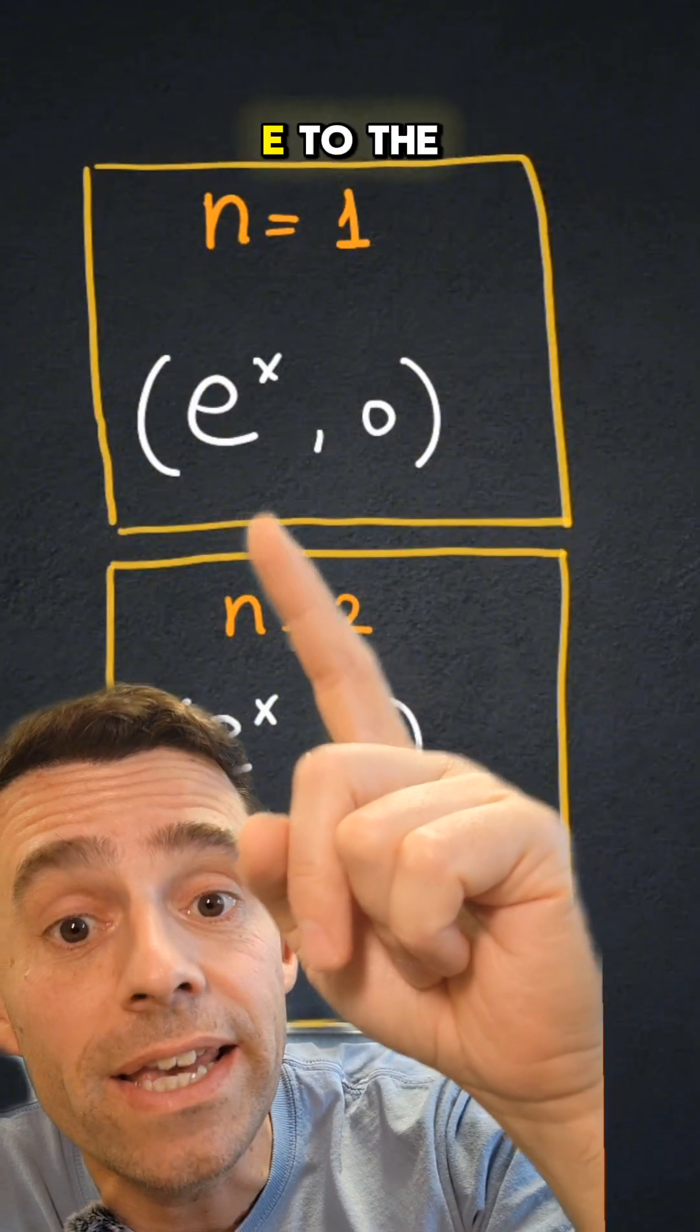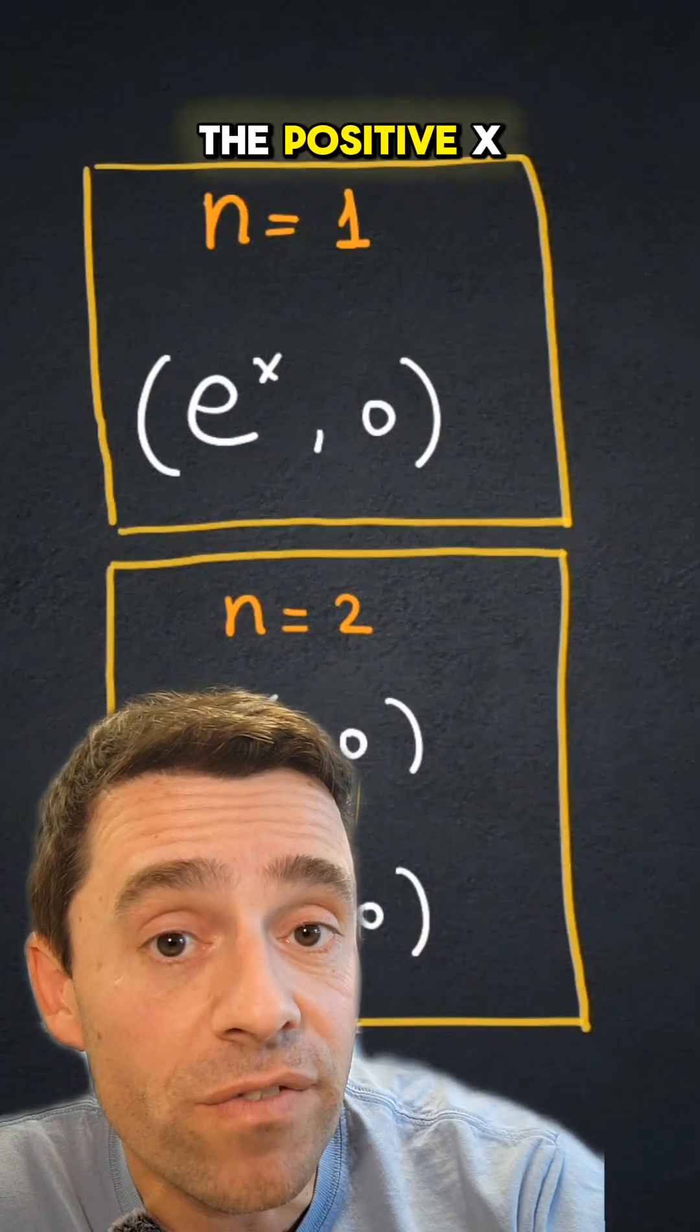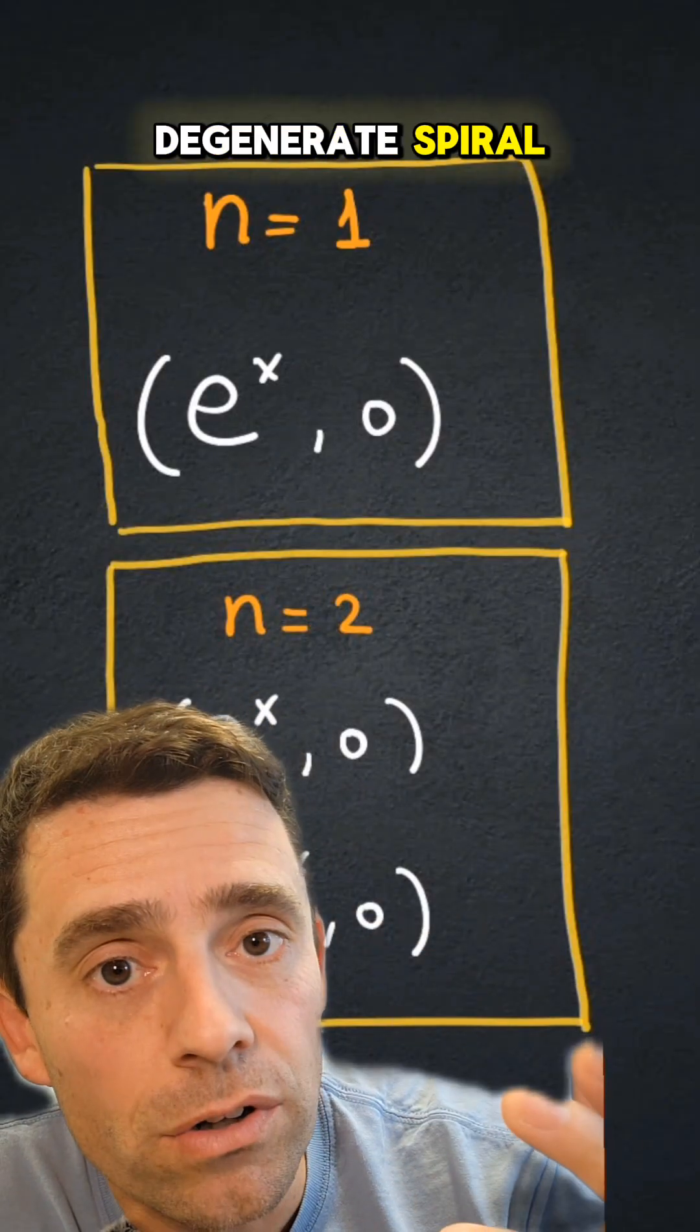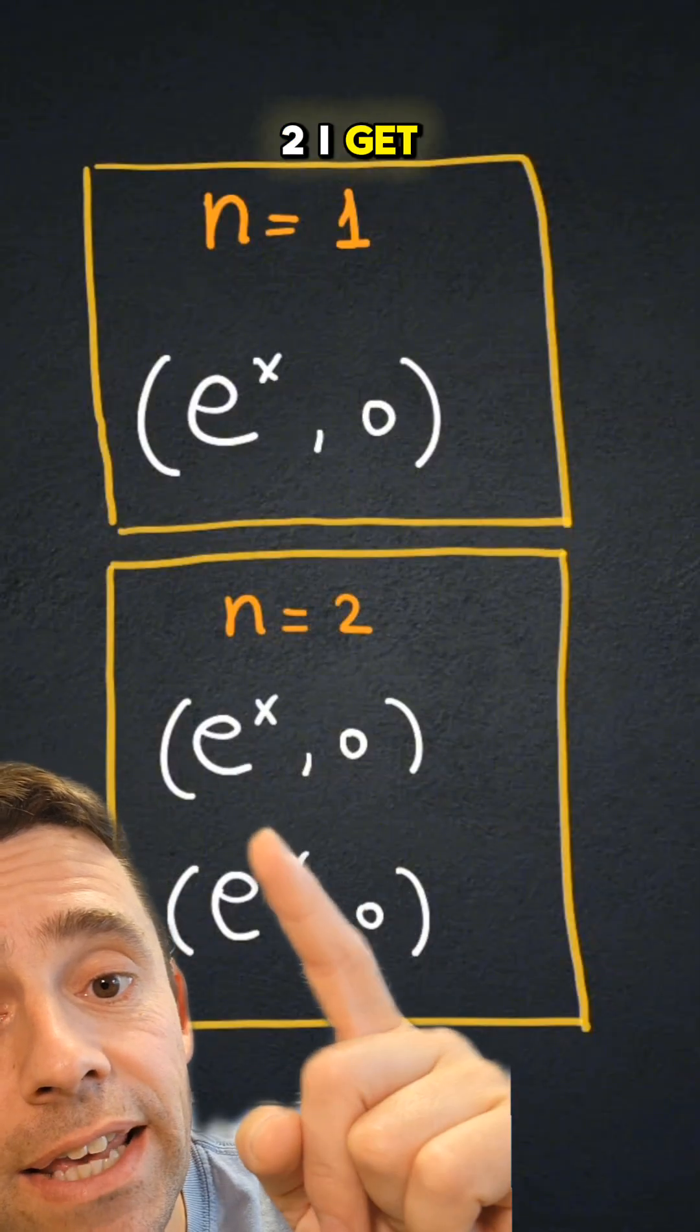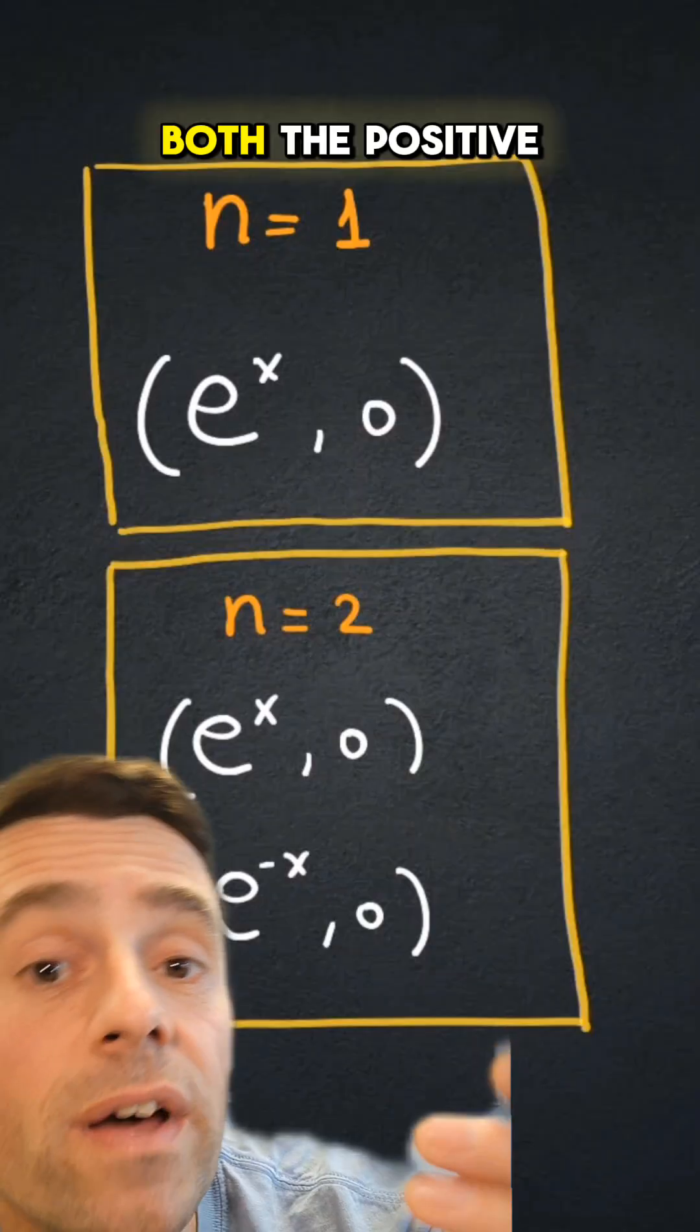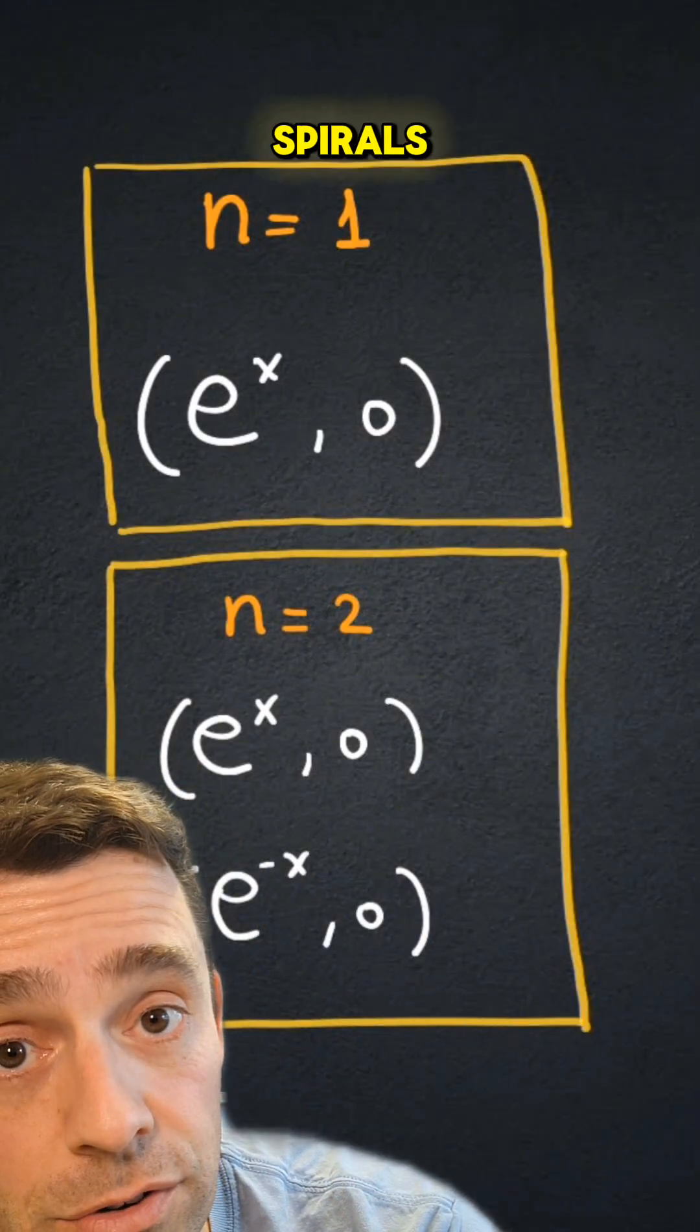With n equals 1, I get e to the x, 0, so that parametrizes the positive x-axis, which I'm going to call a degenerate spiral. When n equals 2, I get e to the x, 0 and e to the minus x, 0, and these are both the positive x-axis, so they are still just degenerate spirals.